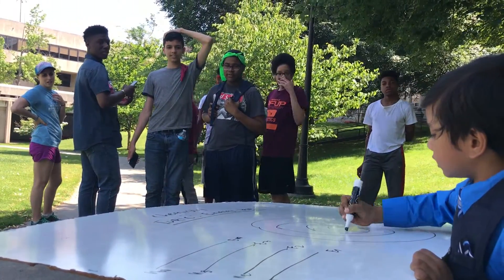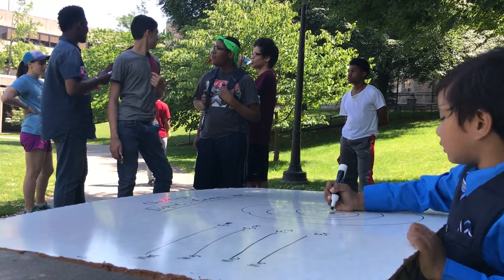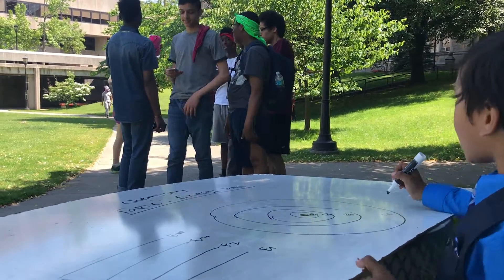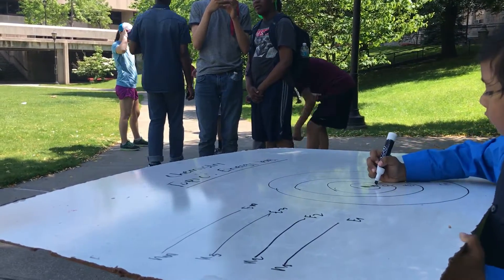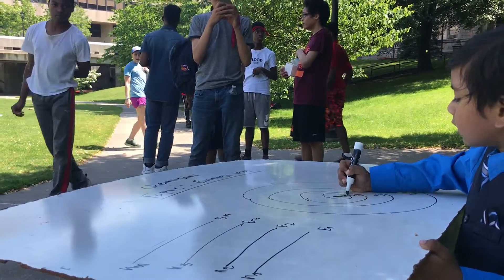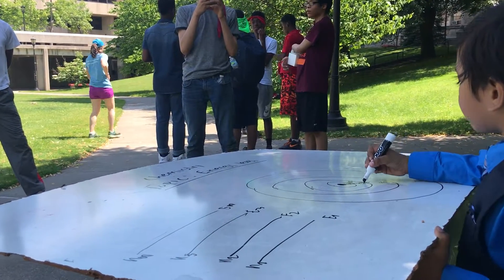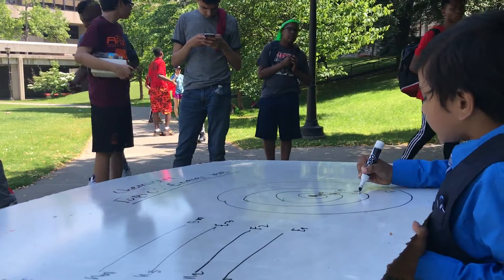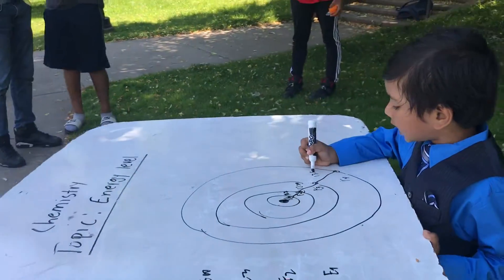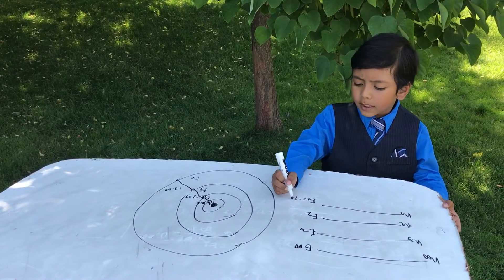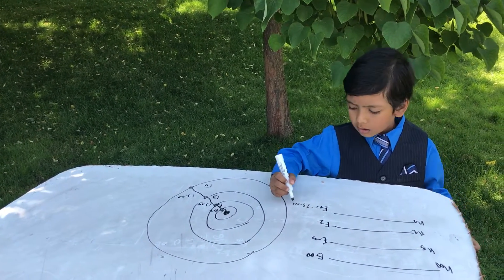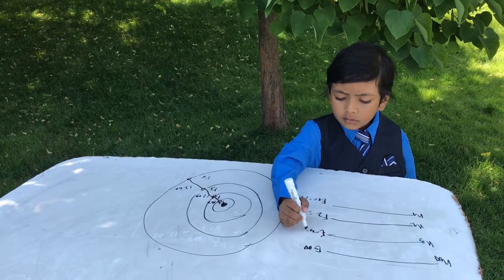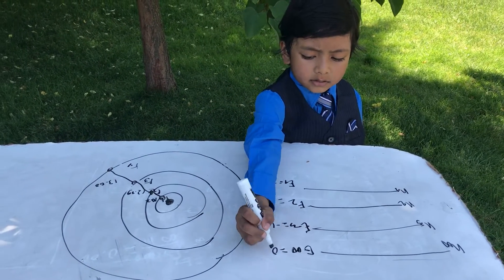Let me draw the circle to illustrate this. This is the nucleus, and this is the electron. We have radius one, radius two, radius three. From radius one to radius two takes 10.2 electron volts. From radius two to radius three is 12.09 electron volts. At radius three to radius infinity, the energy is 13.60 electron volts. E1 is negative 13.60, E2 is equal to negative 3.40, E3 is negative 1.51, and E infinity is 0.00.